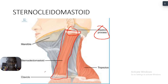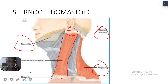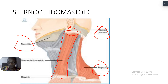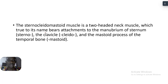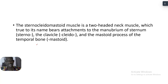The first attachment to the mastoid process is the sternocleidomastoid muscle. Looking at other relations on the diagram, you can see the trapezius, the mandible, and the clavicle. The sternocleidomastoid is a two-headed muscle which, true to its name, bears attachment to the manubrium of the sternum and the clavicle, and inserts on the mastoid process of the temporal bone.